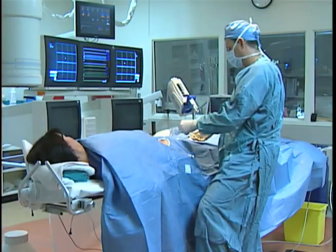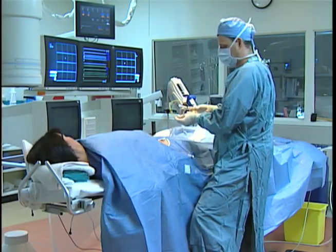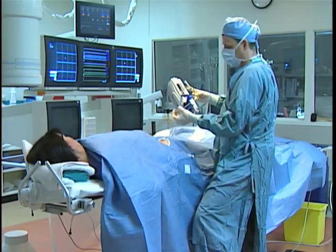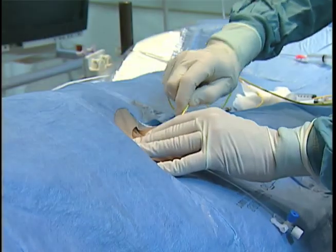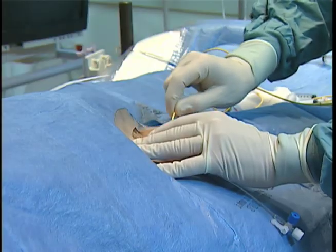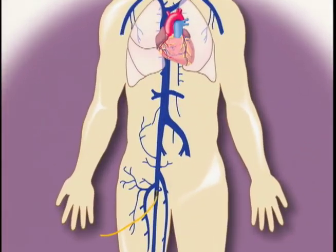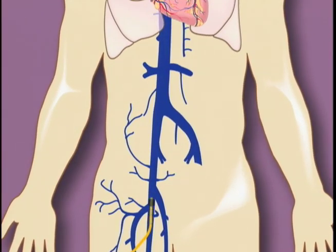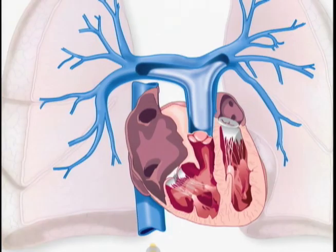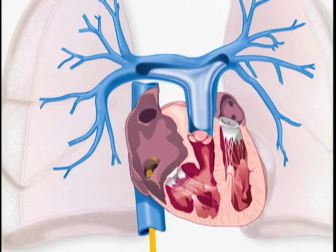The doctor will then insert a thin, flexible, plastic or silicone catheter or tube into a large vein in your neck or groin. The catheter will be carefully advanced to the heart, and through the heart, into the pulmonary artery.